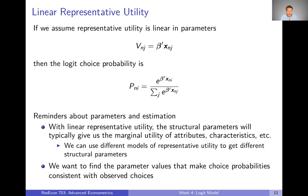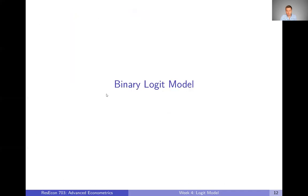Ultimately, we want to find the parameter values that make choice probabilities consistent with observed choices. When we actually observe someone choose an alternative, we want that choice probability to be close to one, and the others close to zero. We observe the actual choices and the X's on the right hand side, and we want to figure out what beta values make these choice probabilities consistent with those observed choices. Next up, we're going to talk about the binary logit model — a specific kind of logit model where we only have two alternatives to choose from.